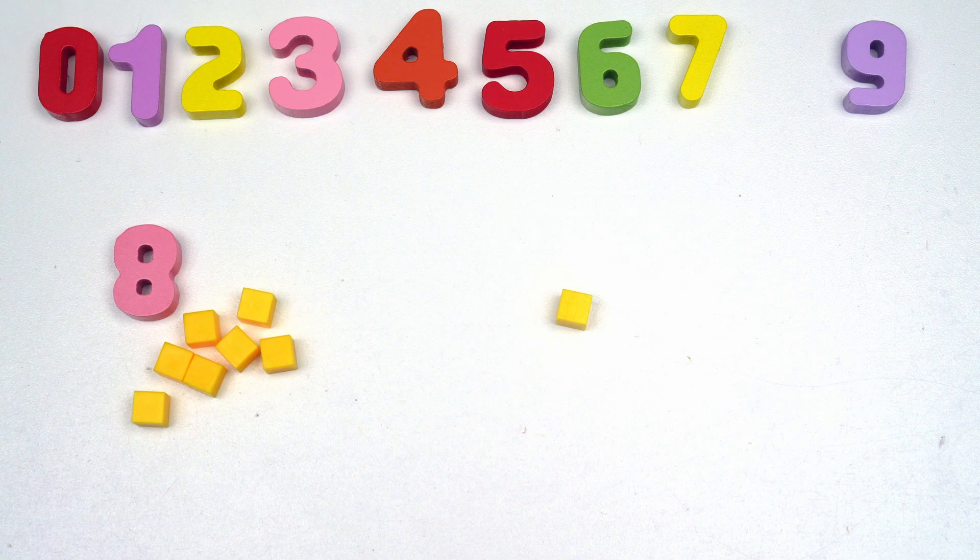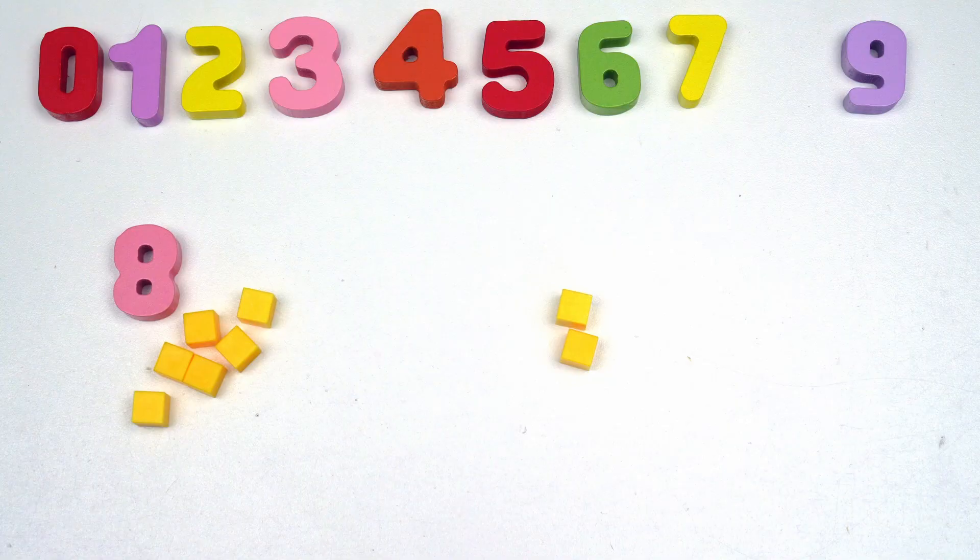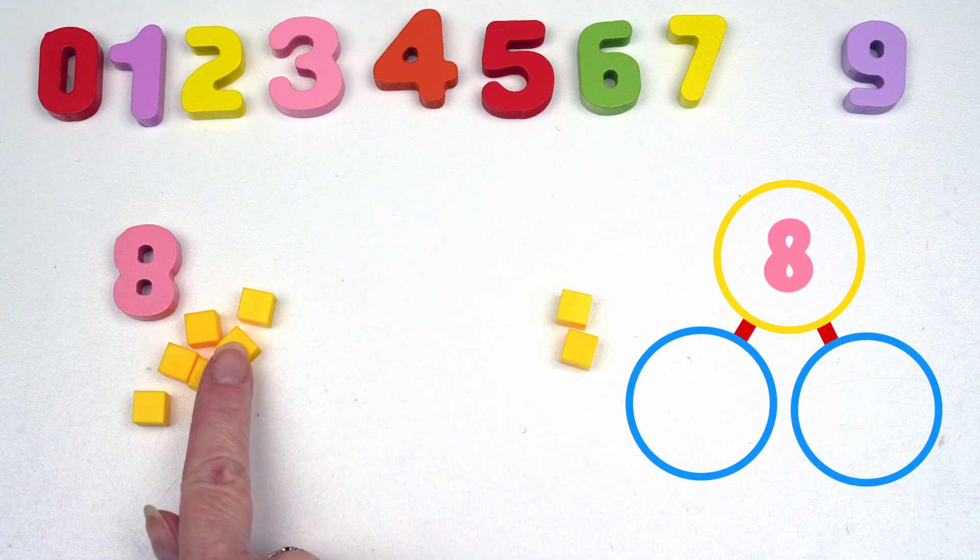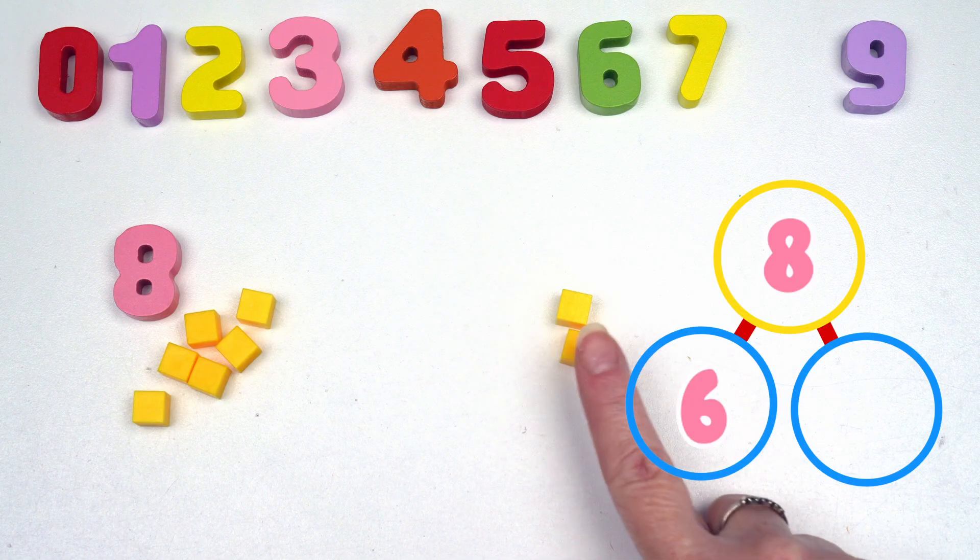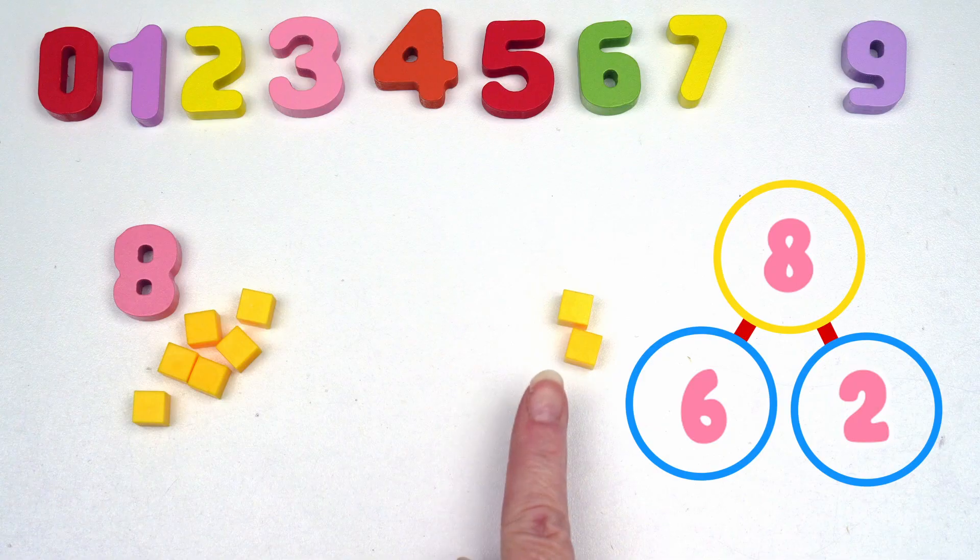And we could keep using our blocks to help us. So if we move another one, then we have one, two, three, four, five, six, plus one, two, seven, eight. So six and two.